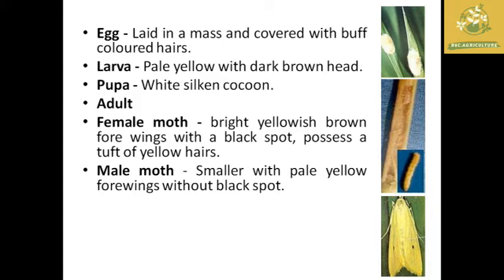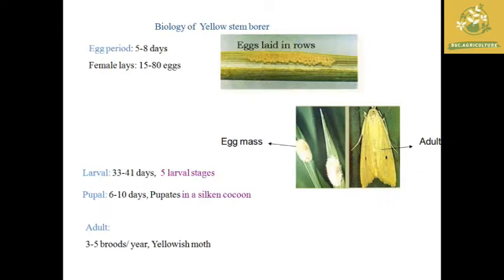The larva is pale yellow in color. The pupa is found in a silken cocoon. The adult shows differences between male and female: the female is yellowish-brown with four rings and a black spot, and has buff-colored hairs found in the egg masses. The male is smaller and pale in color, with four wings having an absence of black spots. These are the pictures along with their biological life period.